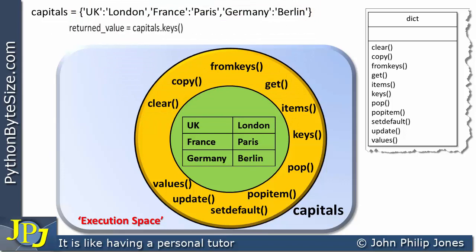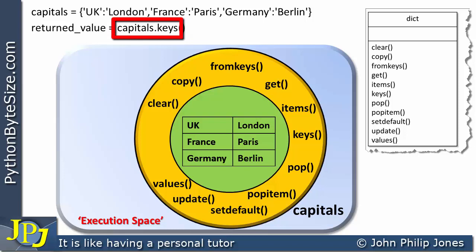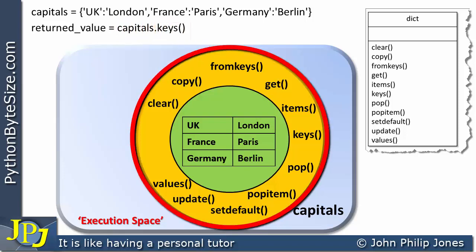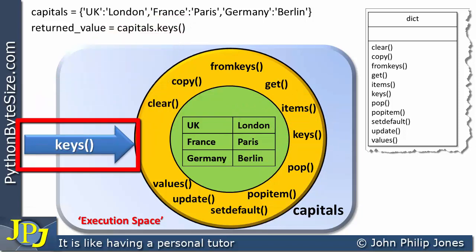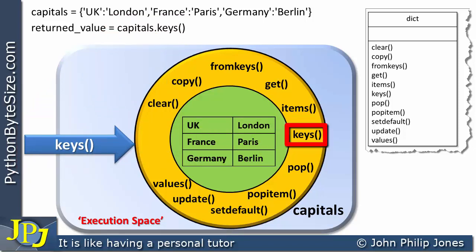Looking at the next program statement, we have a message — this is the object to which the message is going to be sent, and this is the method that's going to be invoked. Consequently, this is the object in the diagram and this is the method to be invoked, as shown here in the diagram.